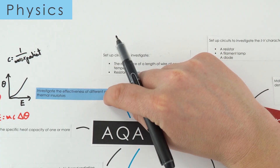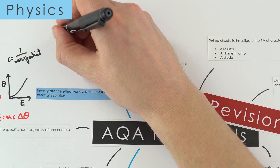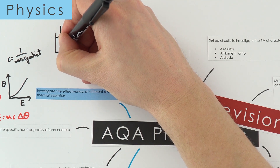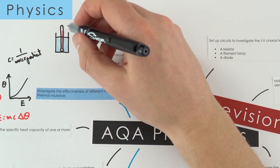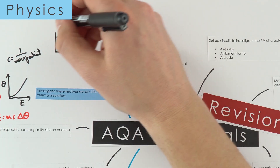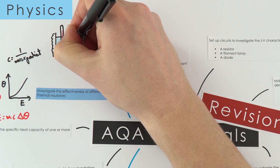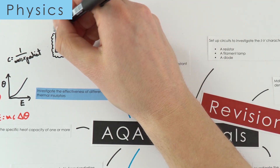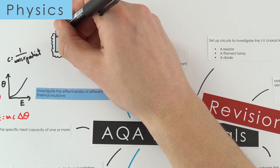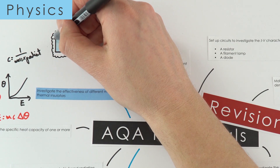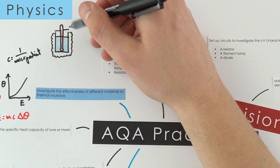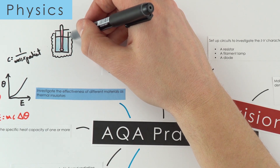To investigate the effectiveness of different materials as thermal insulators, a simple approach uses a beaker of water with a thermometer. Record the temperature at different times to look at the rate of energy transfer, then repeat using different amounts or types of insulation around the beaker. Use a cardboard lid each time to reduce evaporation and heat loss from the top, and plot your data as a graph or bar chart.